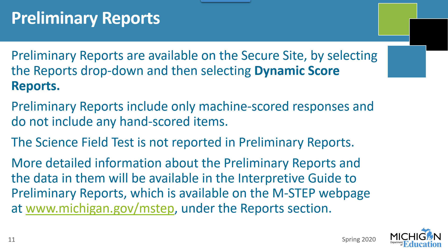Preliminary reports are available 48 hours after the student submits the test. For tests with two parts, like grades 5 and 8 Science, the reports are available after both parts are submitted. They remain available until final reports are released. Preliminary reports are accessed through the Secure Site by selecting the Reports drop-down and then selecting Dynamic Score Reports. For Mathematics, Social Studies, and ELA, the preliminary reports include only machine-scored items — they do not include any hand-scored items. Science is not included on the preliminary reports.